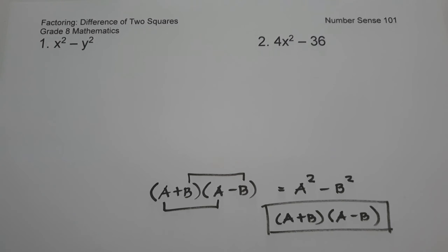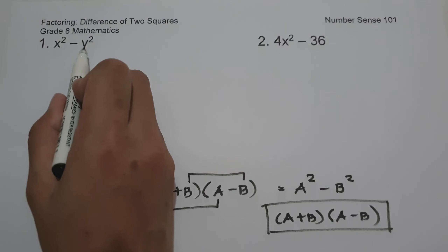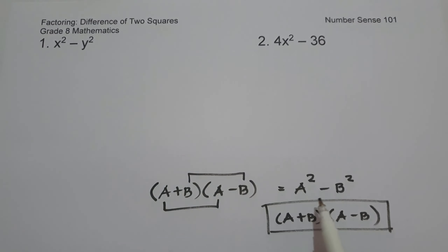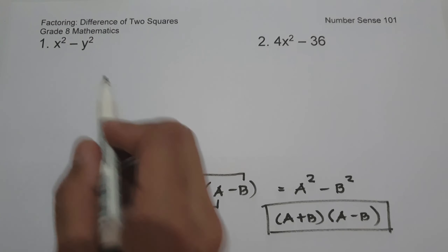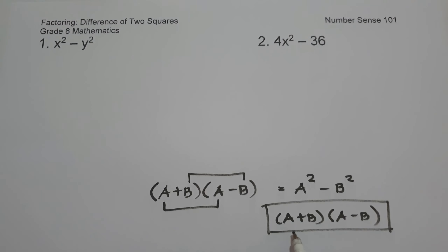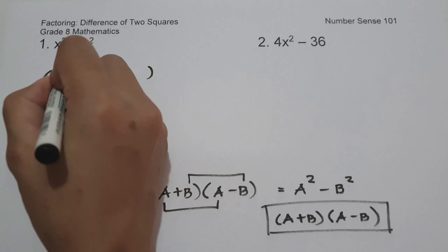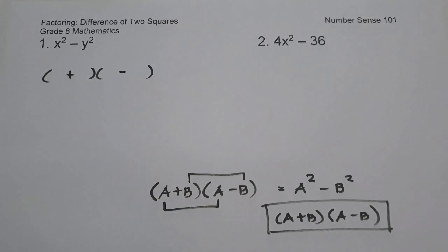So let's have an example. On number one, we have x squared minus y squared. As you can see, our given is written in the form of a squared minus b squared. So to find the factor of this, let us have the product of the sum and difference of the terms, placing plus and minus on each side.